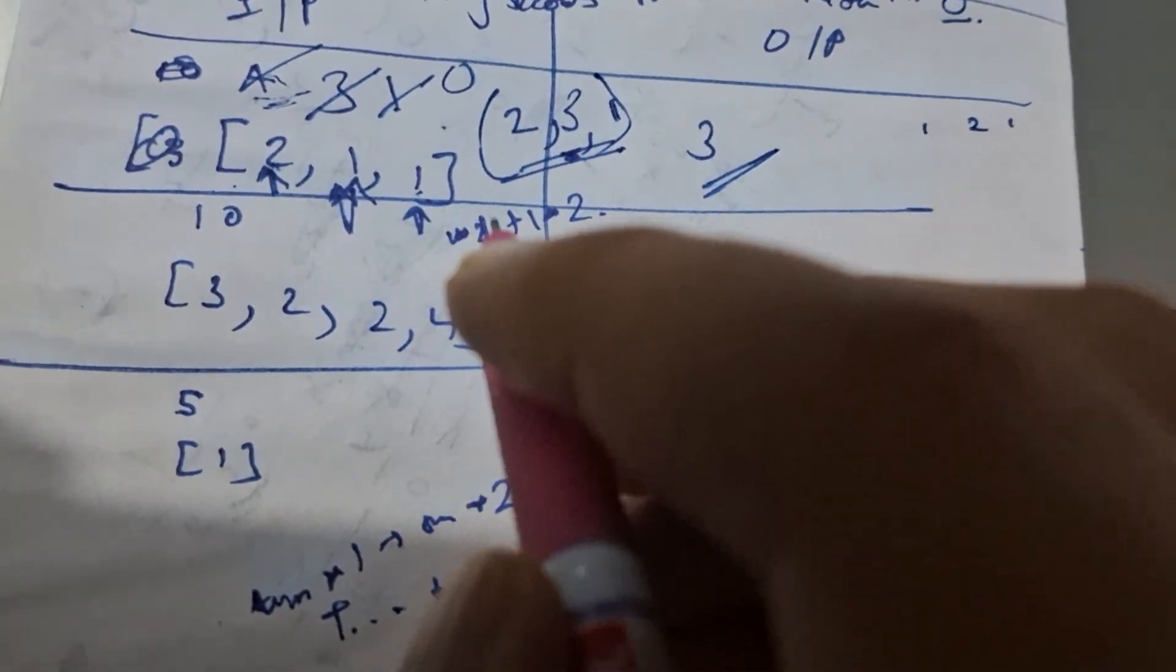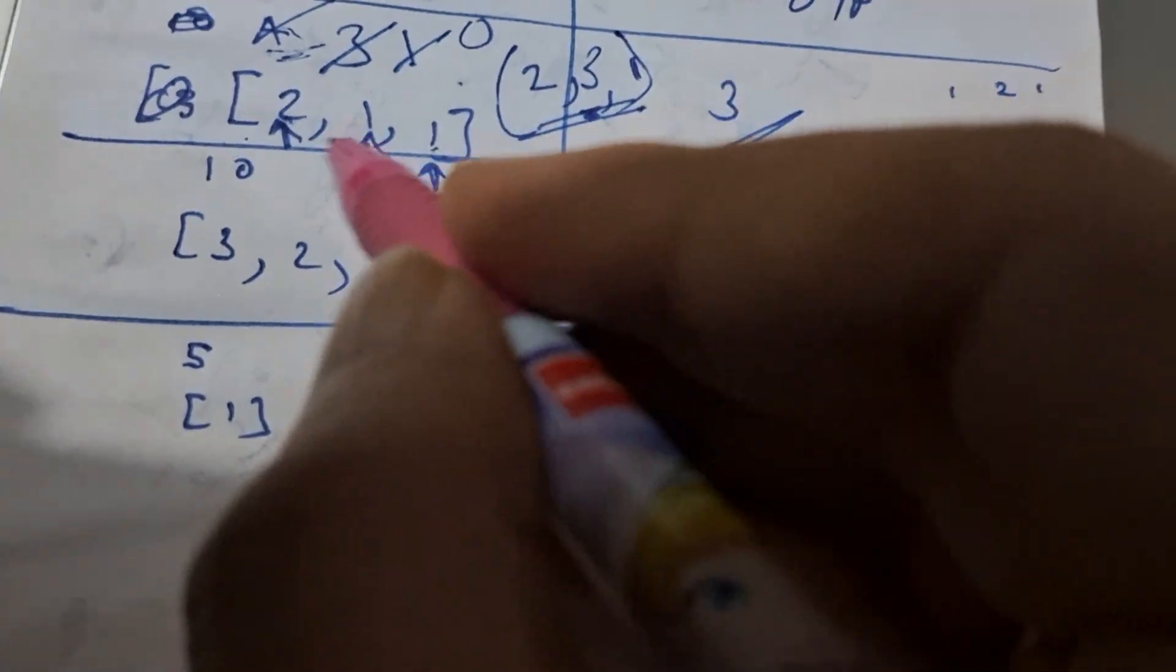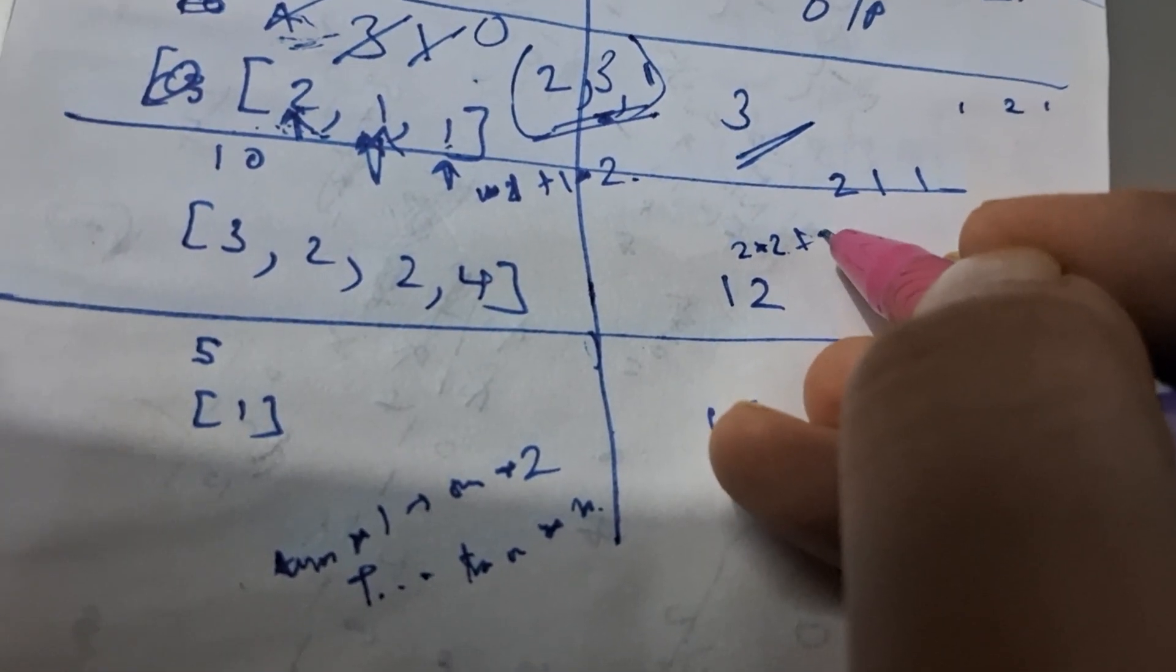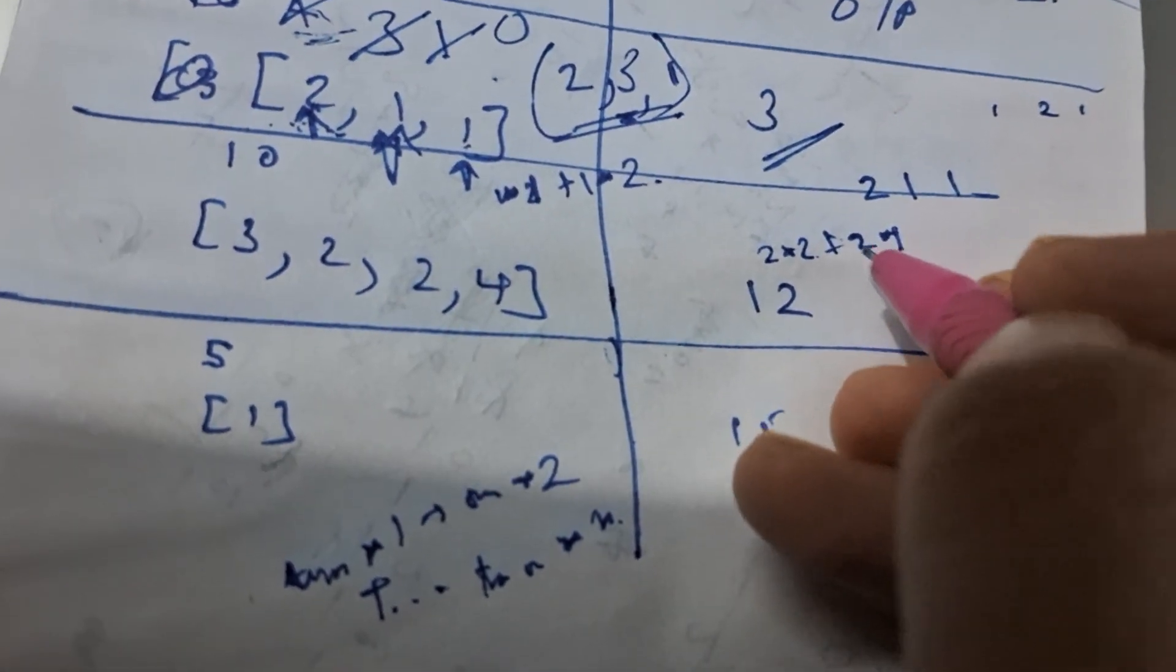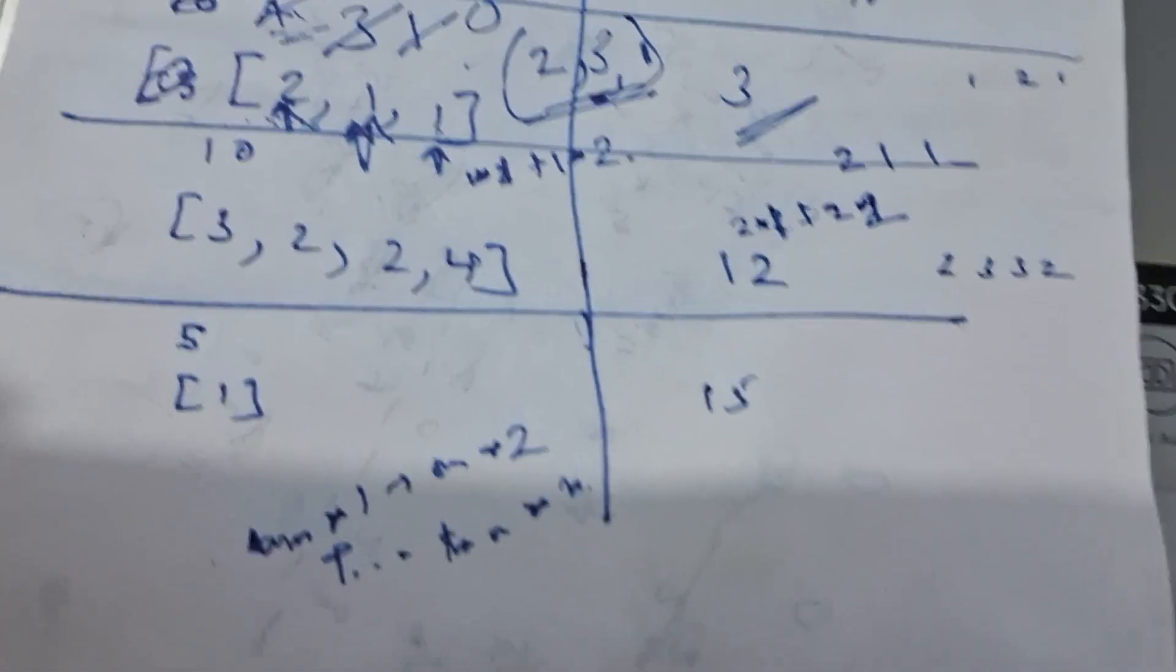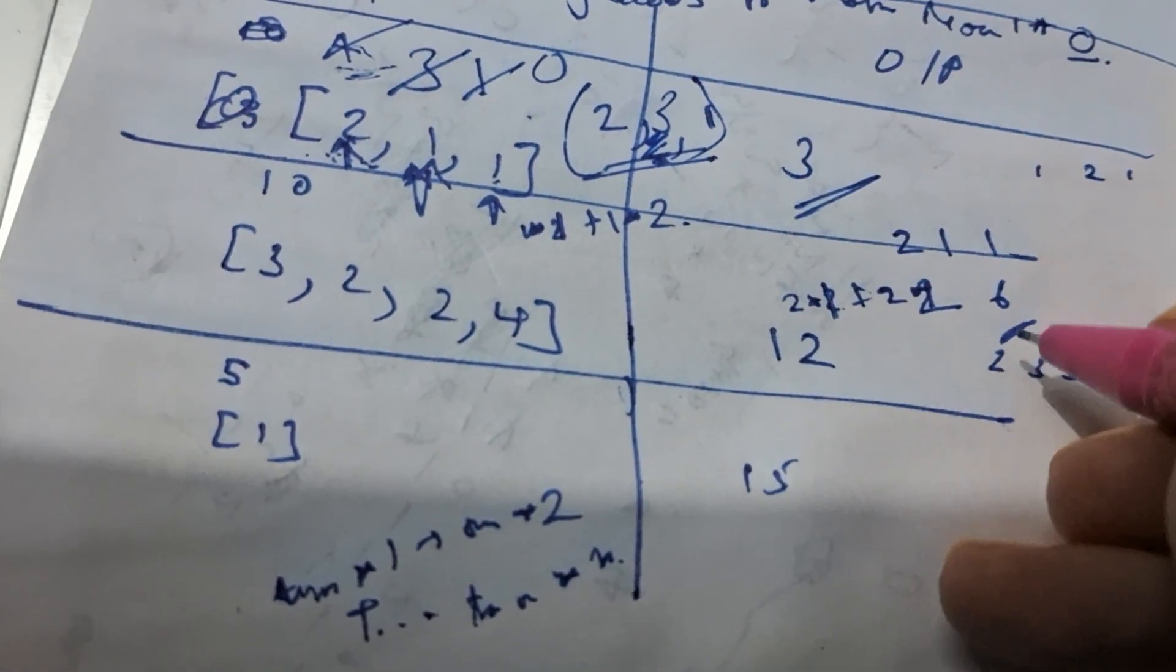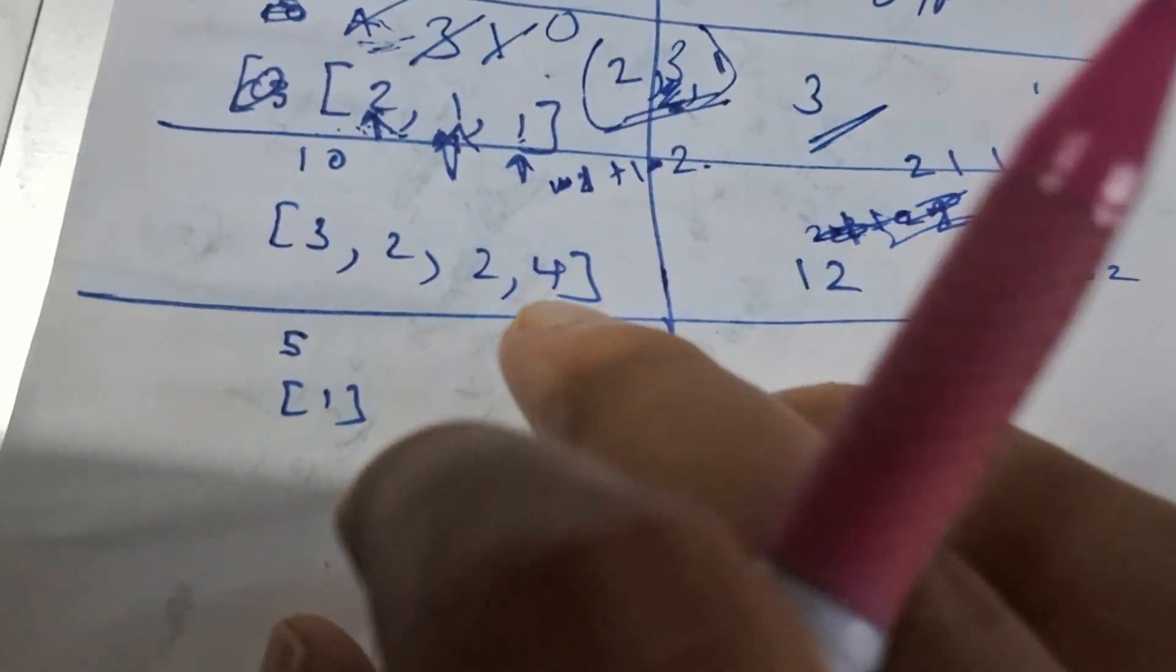If we would have given it like two, one, one, for demolishing these two, it would be 2*1 + 2*2, which is four plus two, that's six. That's already exceeding this length. I hope this is clear.